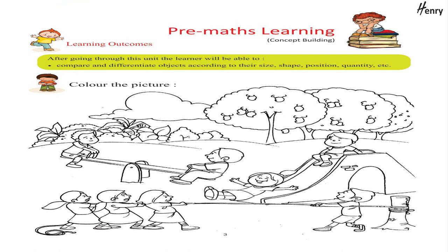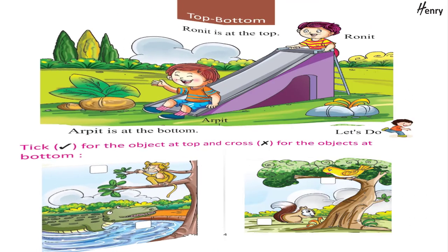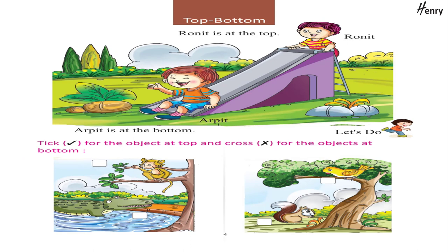Pre-maths learning concept building. Learning outcomes: after going through this unit, the learner will be able to compare and differentiate objects according to their size, shape, position, quantity, color, etc. Color the picture. Top, bottom — Arpit is at the top, Arpit is at the bottom. Let's do: tick for the object at top and cross for the objects at bottom.